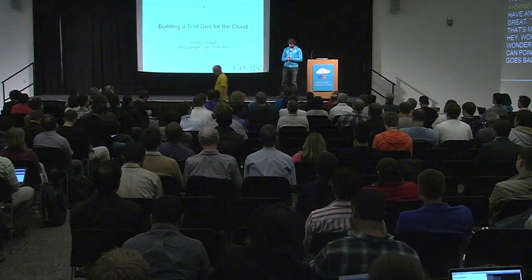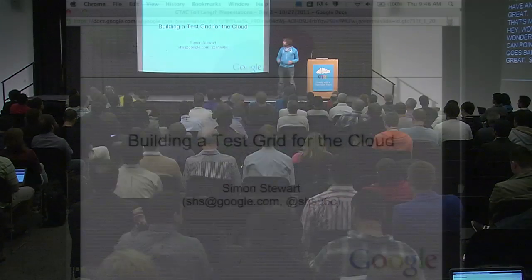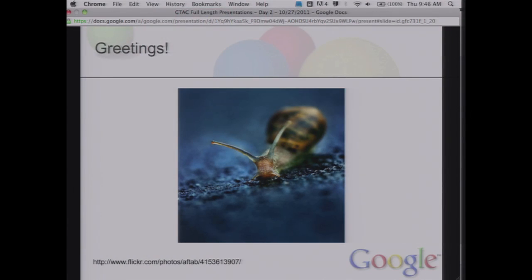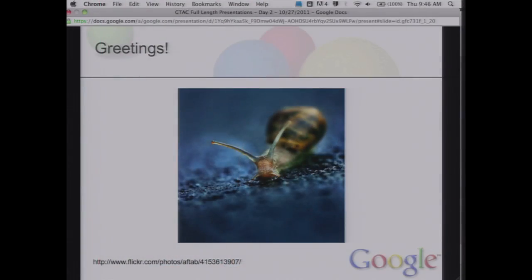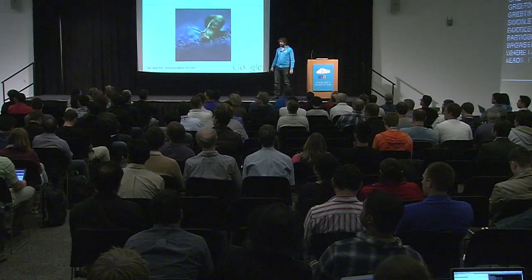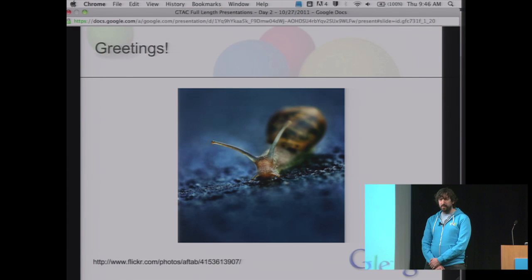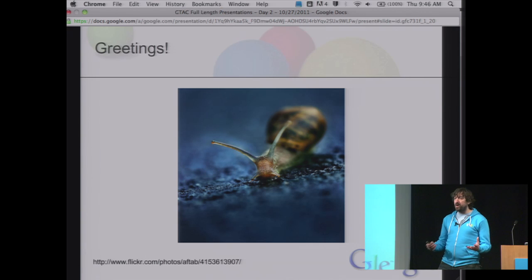Building a test grid for the cloud. I'm Simon Stewart. I work at Google as an SET. In particular, I work on the browser automation team, where I am one of the tech leads. What does a browser automation team do? Well, it's a team that automates web browsers. In particular, we contribute quite a lot to the Selenium project. I'm the creator of WebDriver as well, and that forms a key part of our infrastructure.